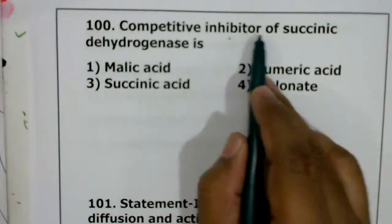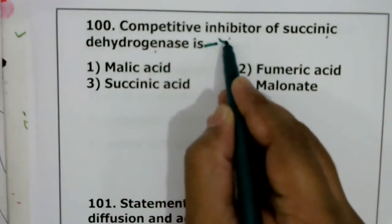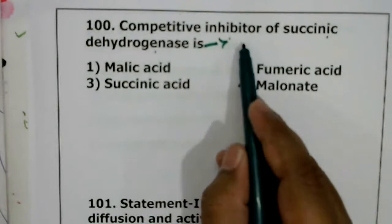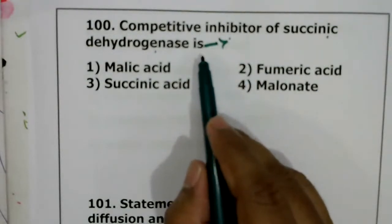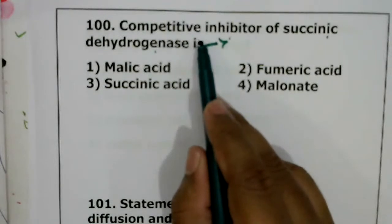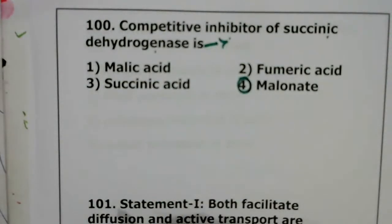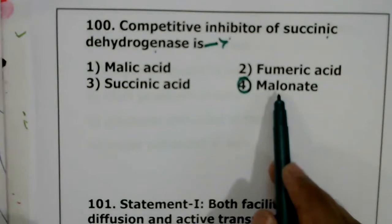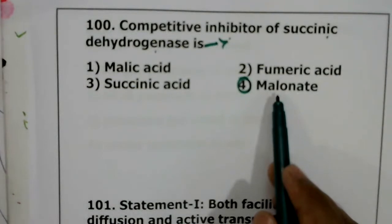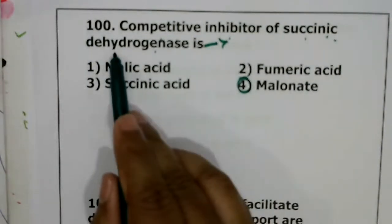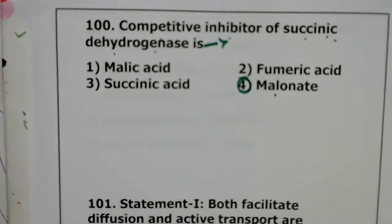Question 100: competitive inhibitor of succinic dehydrogenase enzyme. This enzyme is used in the Krebs cycle and commonly binds with succinic acid, but sometimes it binds with malonate instead. Malonate is structurally similar to succinic acid. Any chemical that is structurally similar to the substrate of an enzyme is called a competitive inhibitor. So malonate is the competitive inhibitor. Question 100, correct answer is the fourth option.